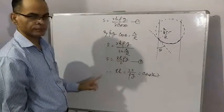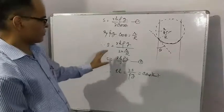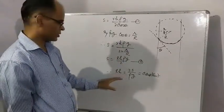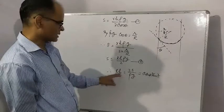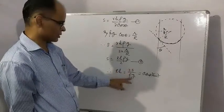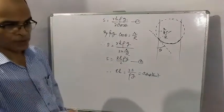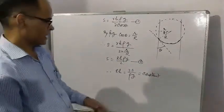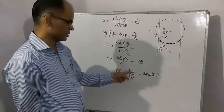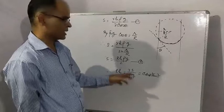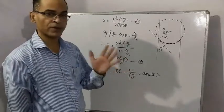From this equation we can draw an important conclusion: R equals 2S upon ρg. For a given liquid at constant temperature, S is constant, surface tension is constant, density is constant, and g is constant. Therefore for a given liquid at constant temperature, R into h is a constant.